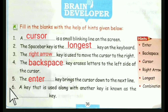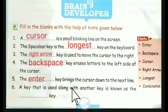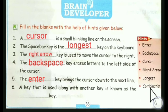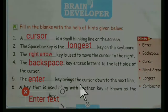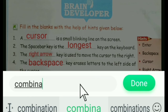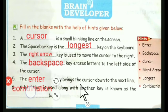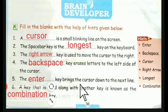The sixth question is: a key that is used along with another key is known as the dash key. That is known as the combination key. The spelling is C-O-M-B-I-N-A-T-I-O-N — combination. So this is the answer to question six, and we have completed the fill-in-the-blank section.